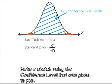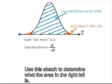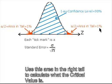Make a sketch using the confidence level that was given to you. Use this sketch to determine what the area in the right tail is. Use this area in the right tail to calculate what the critical value is.